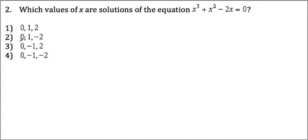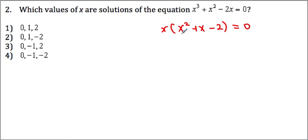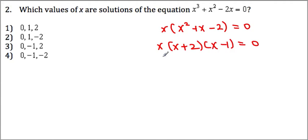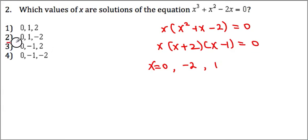Number 2. We want to find out the solutions. We can factor this one by x first, then we get x squared plus x minus 2 equal to 0. Once you factor further, x times x plus 2 times x minus 1 equal to 0. Then we get x must equal 0 from the first factor. From the second factor, we get negative 2. From the third factor, we get 1 — so 0, negative 2, and 1, which is choice 2.